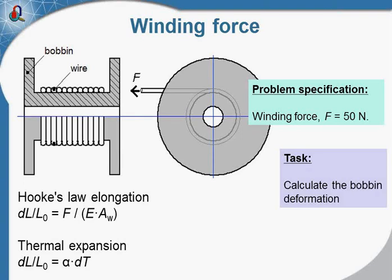Relative elongation of the wire according to Hooke's law is described by this formula, where F is the force, E is the Young's modulus in Pascals, and A is the cross-section of the wire. L0 is the initial length of the wire.